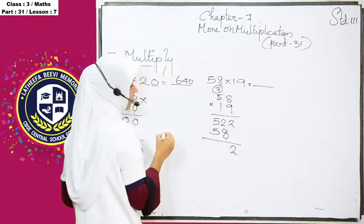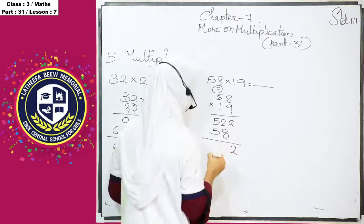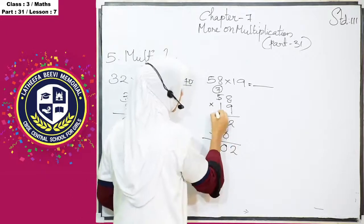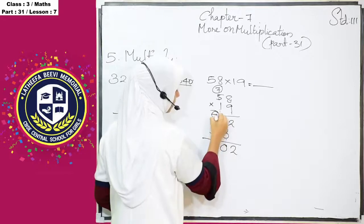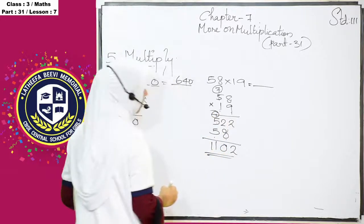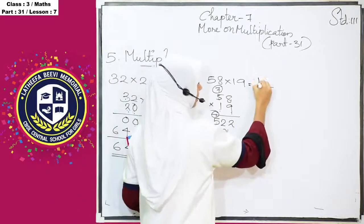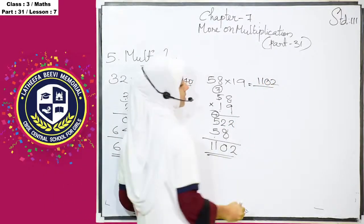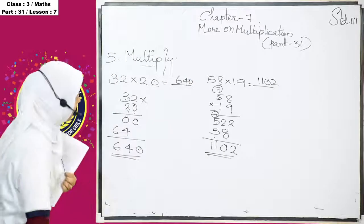So, 2, 8 plus 2 is 10, 0 here. 1 is carry over. And 5 plus 5 is 10 and plus 1, 11. 1100 and 11, 1100 and 2 is the answer. So, then next question.